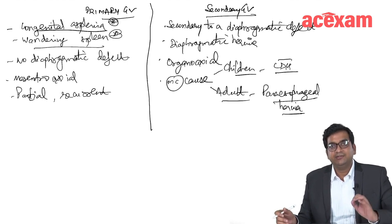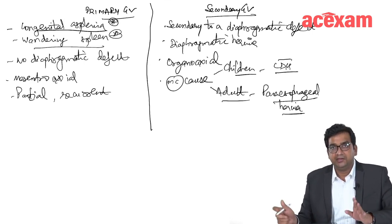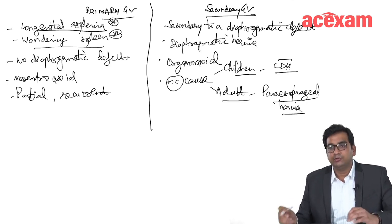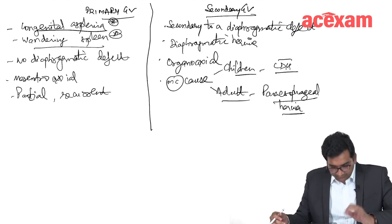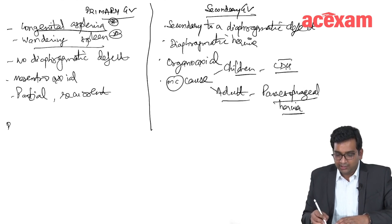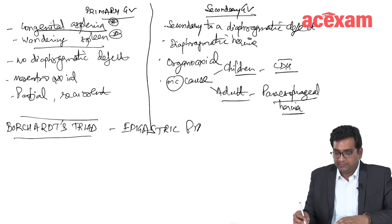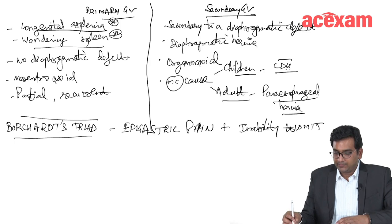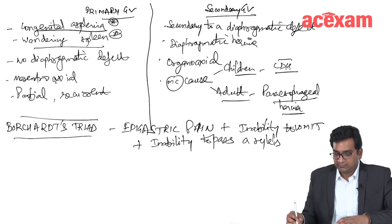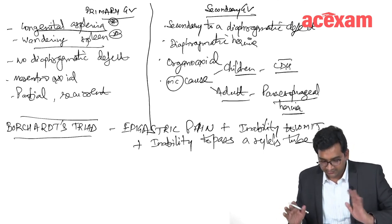When a patient arrives at the emergency with pain abdomen, multiple retching but inability to vomit, and you are unable to place a Ryle's tube because the stomach is folded on itself — this classical triad is known as Borchardt's triad. It consists of epigastric pain, inability to vomit, and inability to pass a Ryle's tube.